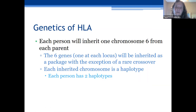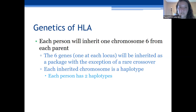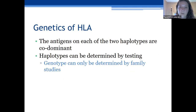HLA antigens are inherited as a haplotype — all of the loci on a chromosome are inherited as a set. You get one HLA set from each parent. These loci are very close together, so rare crossover types can occur. Each person will have two haplotypes, one from the mother and one from the father, so this can actually be used in paternity testing. They are considered codominant, so both will be expressed, and haplotypes can be determined by testing familial genotypes.